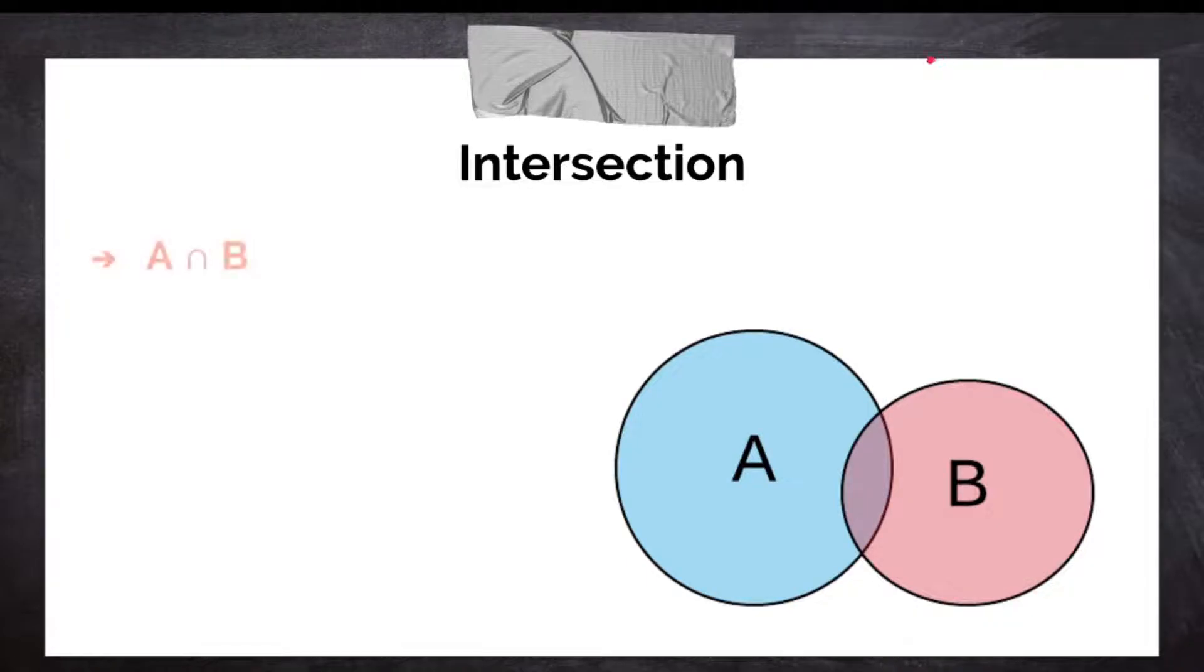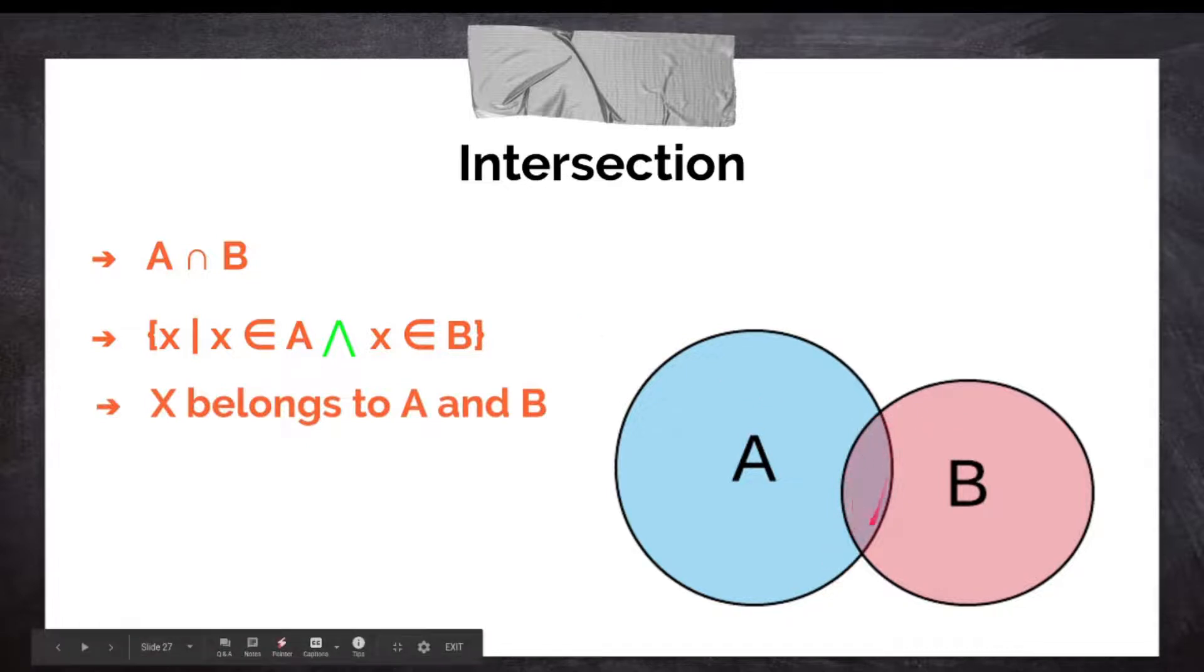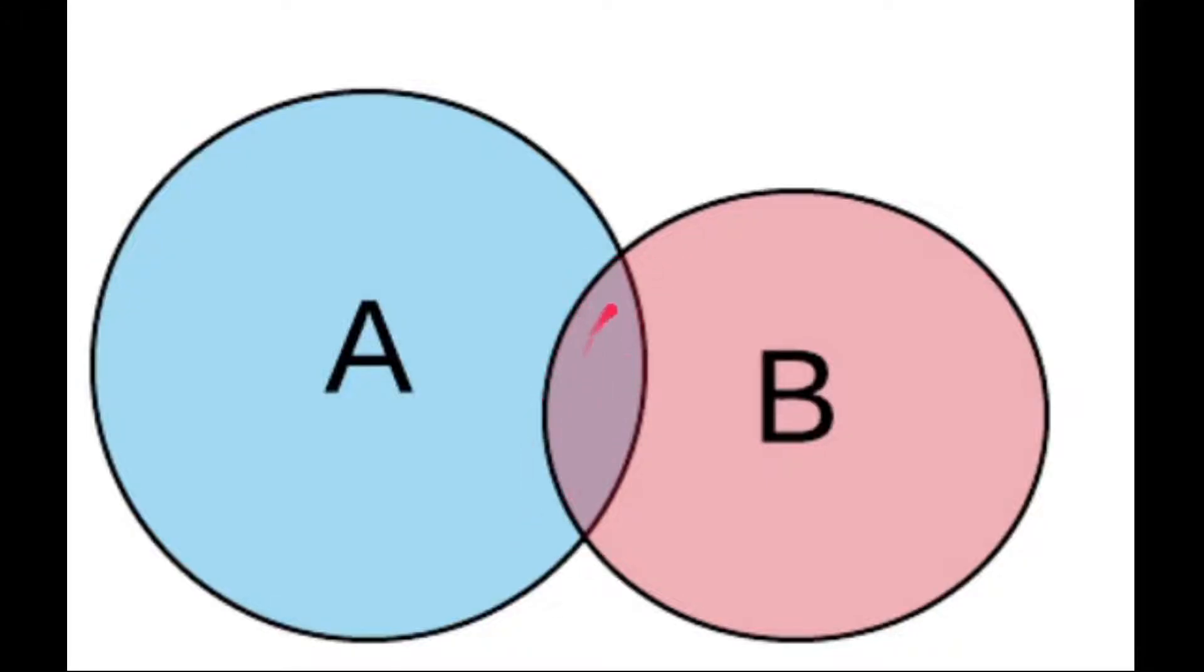Intersection, on the other hand, it's denoted by this symbol. And it means if X is a member of A intersection B, then X is an element of A and B. So this area in here represents A intersection B. X belongs to both A and B.